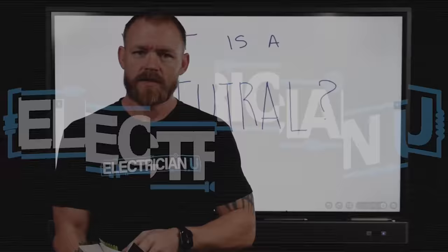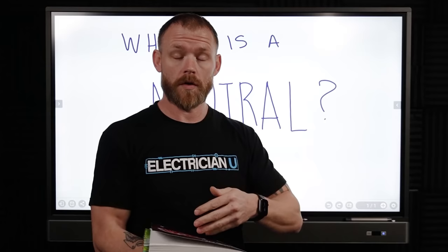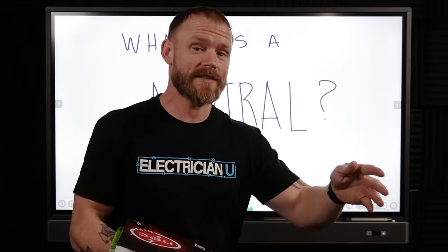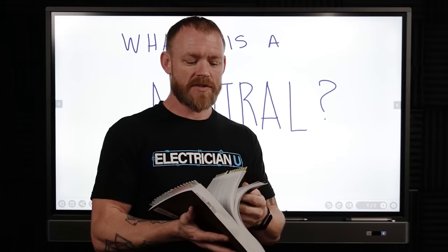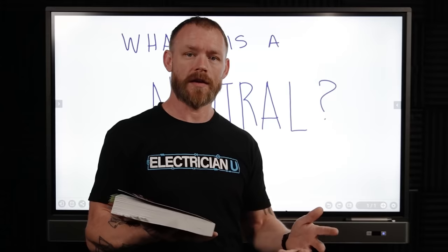There are a couple of different ways that we can look at a neutral. In code, for the longest time, a neutral was just called a grounded conductor. They didn't really go by neutral in most of this book; they called it the grounded conductor, which is confusing because there's an ungrounded conductor and a grounding conductor. So when they talk about grounding, a lot of times as an electrician you think they're talking about the ground, but they're actually talking about the neutral and calling it the grounded conductor.